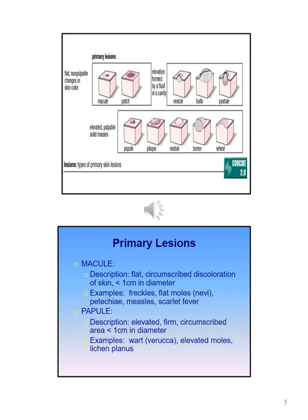A macule is a flat, circumscribed discoloration of skin less than one centimeter in diameter. Examples include freckles, flat moles, petechia, measles, and scarlet fever. A papule can be described as an elevated, firm, circumscribed area less than one centimeter in diameter. Examples are warts, elevated moles, and lichen planus.